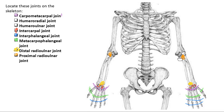Joint locations should be a piece of cake because they are all named based on the bones there. If you remember the names of your bones, these joint locations should follow naturally.